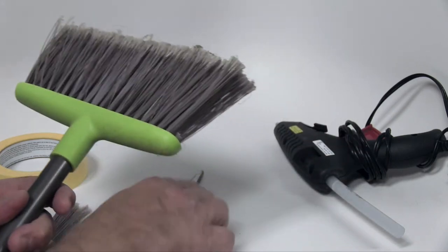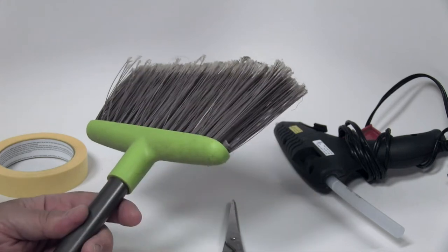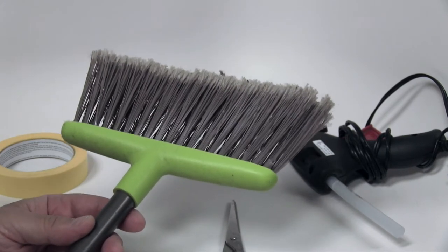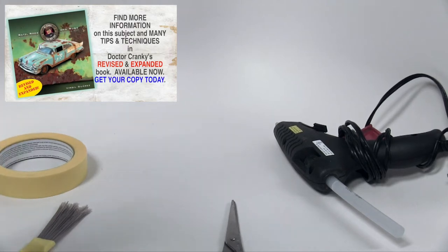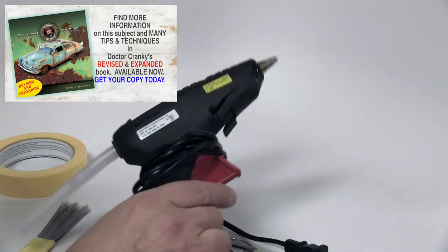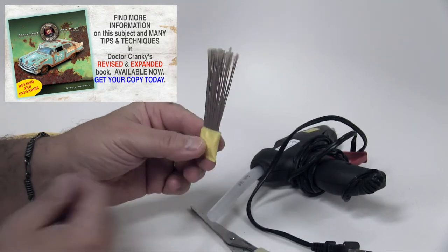So we took our scissors and we cut just basically two little bundles. It's not going to hurt the broom at all. Nobody will miss them. And with a little bit of hot glue, we set up this little brush right here.